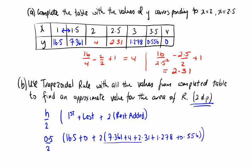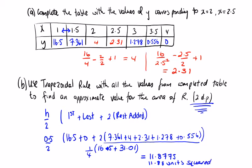7.361 plus 4 plus 2.31 plus 1.278 plus 0.556. So I would type these in first, add them together, multiply it by 2. That will give a value of 31.01, 16.5 added to that. And a half divided by 2, that's a quarter. So we're going to get a quarter of this, a quarter of 47.51, which is going to give us 11.8775, correct to 2dp, 11.88. And always put in your units squared when we're asked for area.